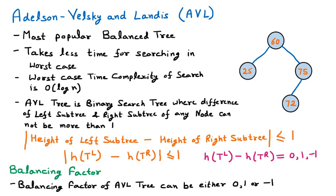We are checking whether the given tree is AVL or not by calculating the balancing factor of each node. If all nodes satisfy the property of having a balancing factor of 0, 1, or -1, then it is an AVL tree. Rule number 1: we assign a balancing factor of 0 to all leaf nodes, since a leaf node has no children. So the balancing factor of node 25 is 0 and the balancing factor of node 72 is 0. We then find balancing factors from bottom to top.